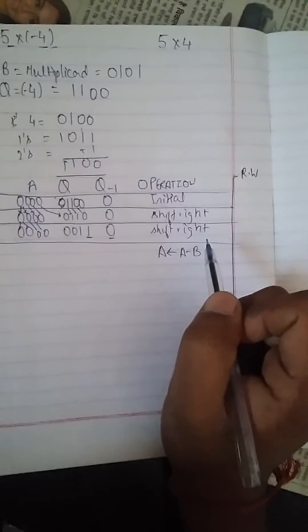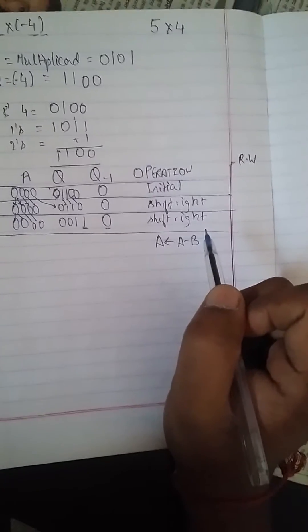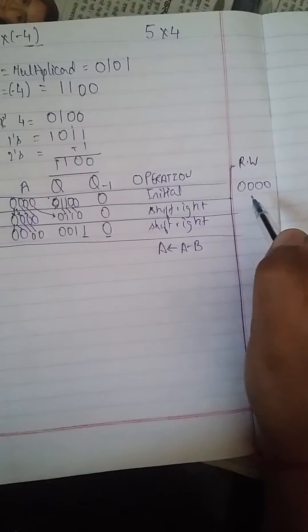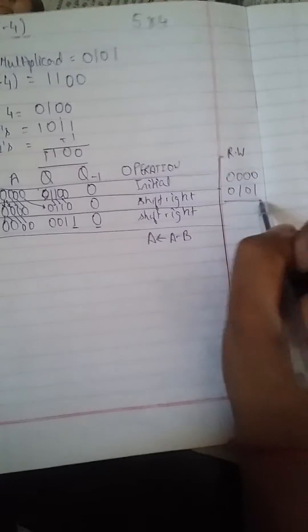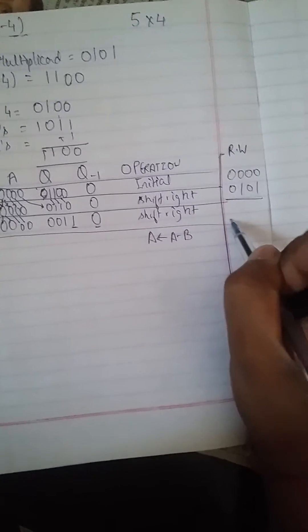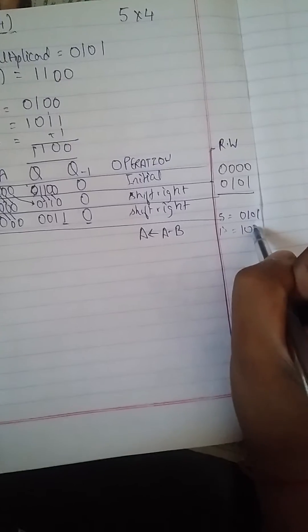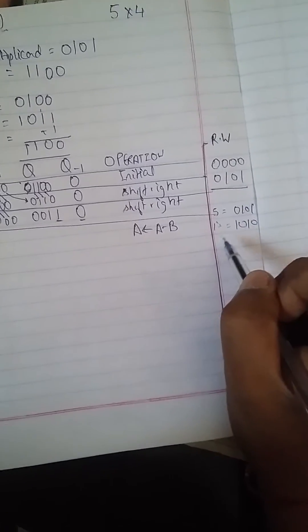Now here Q-minus-1 is 1 and the last bit of Q is 0, so in the third step we do A equals A minus B. B is 0101. To subtract, we find the two's complement of 5: 0101 in binary, one's complement is 1010, and two's complement is 1011.